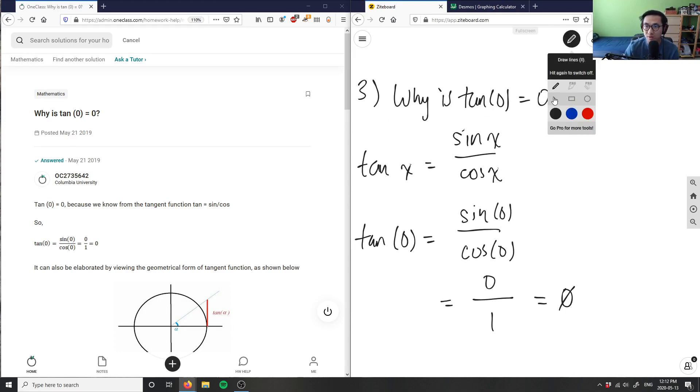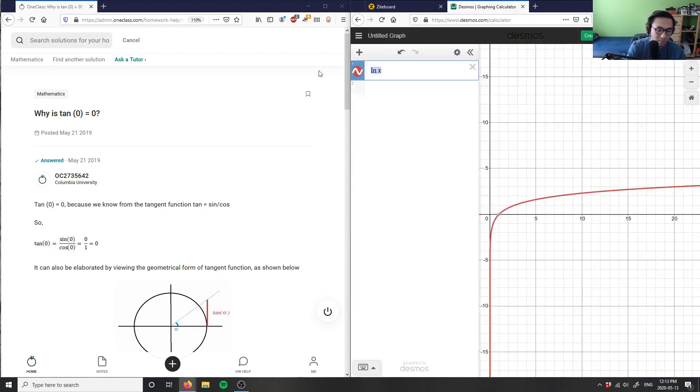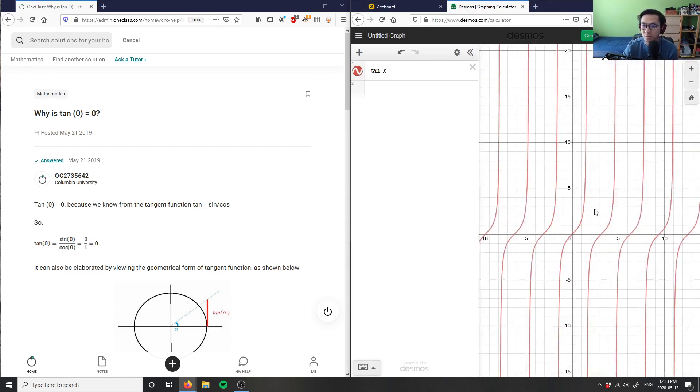You can also graph this function. Tangent x is actually kind of an odd graph to graph here. But you get something like this. And then there's an asymptote here. And then it kind of restarts like that. Let me just graph out tangent x here. It looks something like this.